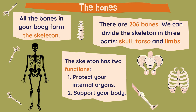There are 206 bones in our body, and we can divide the skeleton into three parts: the skull, the torso, and the limbs.